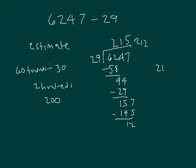Run our check. Nine times five is forty-five — five, regroup of four. Nine times one is nine, plus four is thirteen — three, regroup of one. Nine times two is eighteen, plus one is nineteen. Place a zero for the two, because the two was worth twenty.